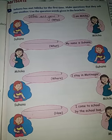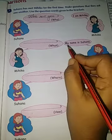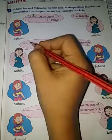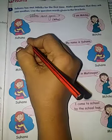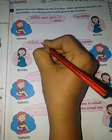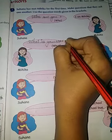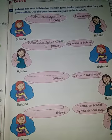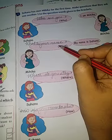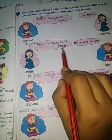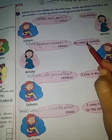For the next question, the answer is 'My name is Suhana,' and the hint is 'what.' So the question will be: 'What is your name?' We have used 'what,' and the answer coming is 'My name is Suhana.'